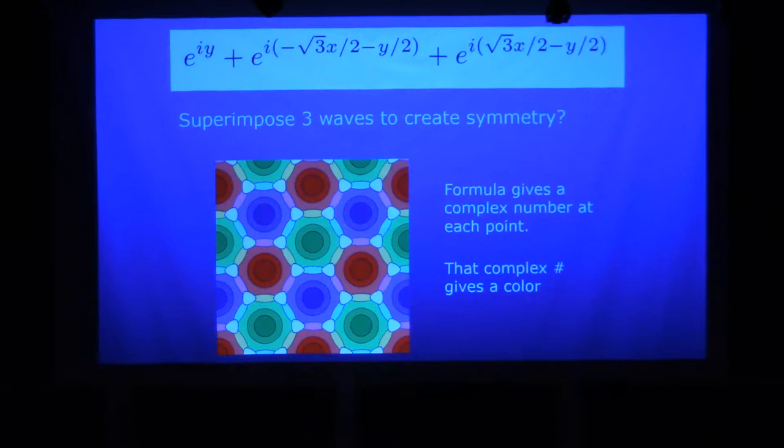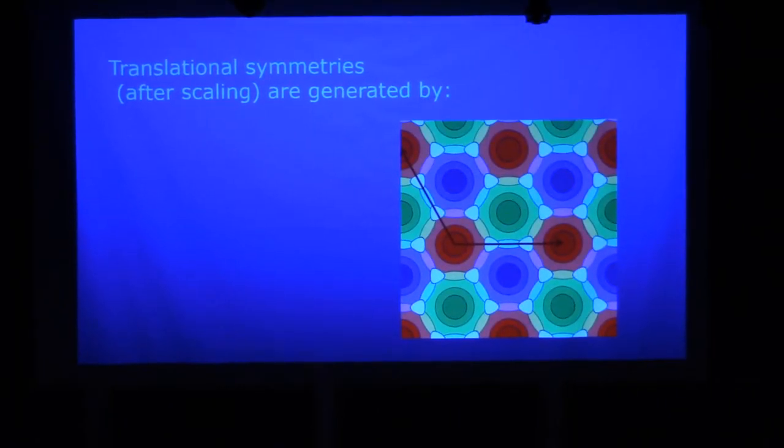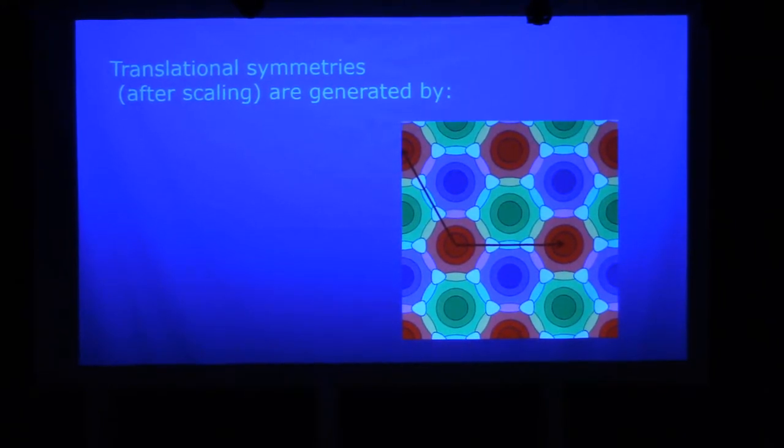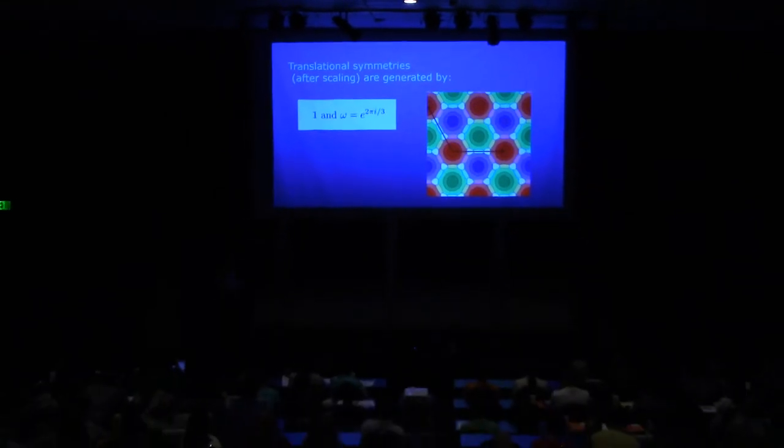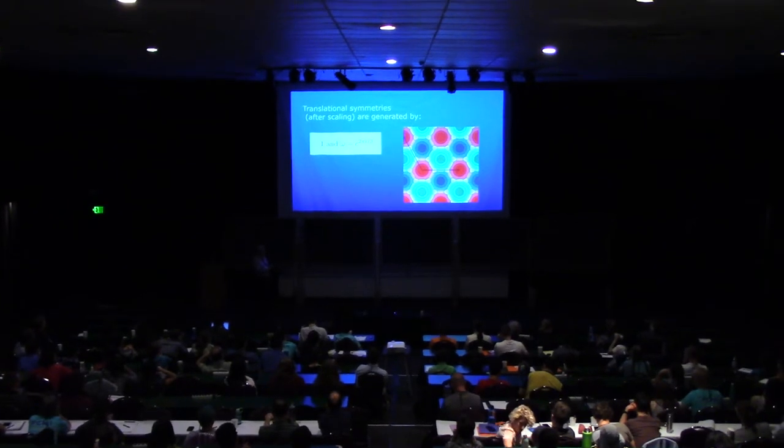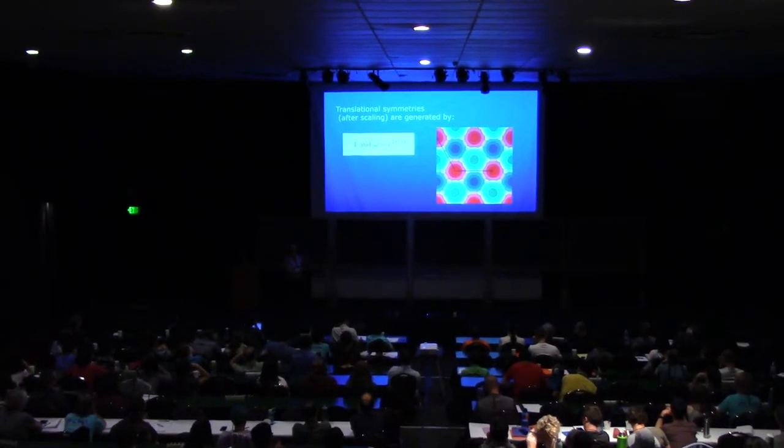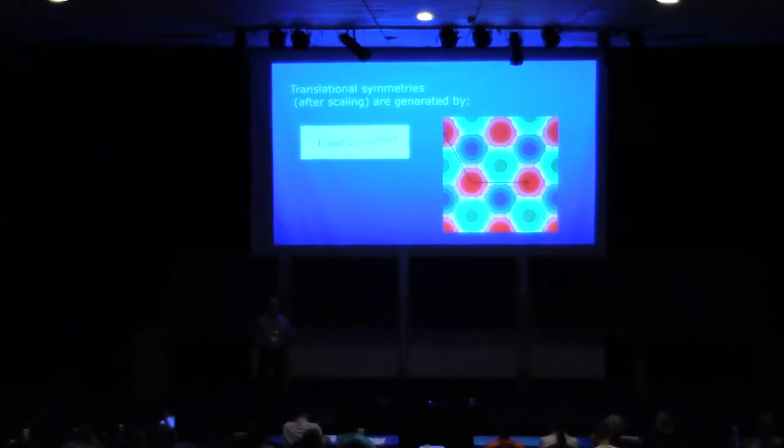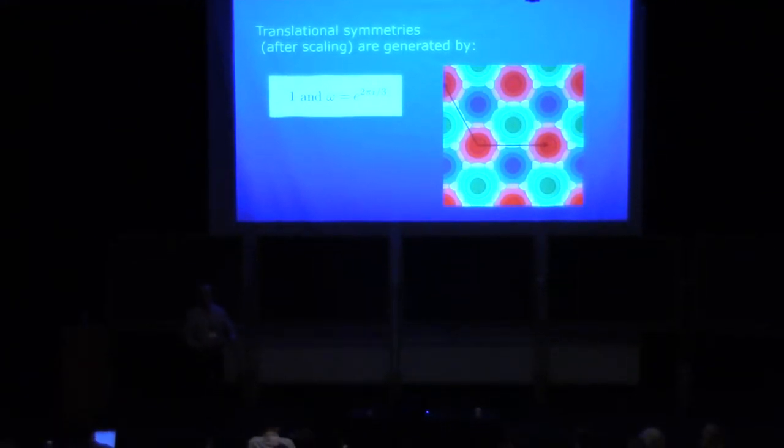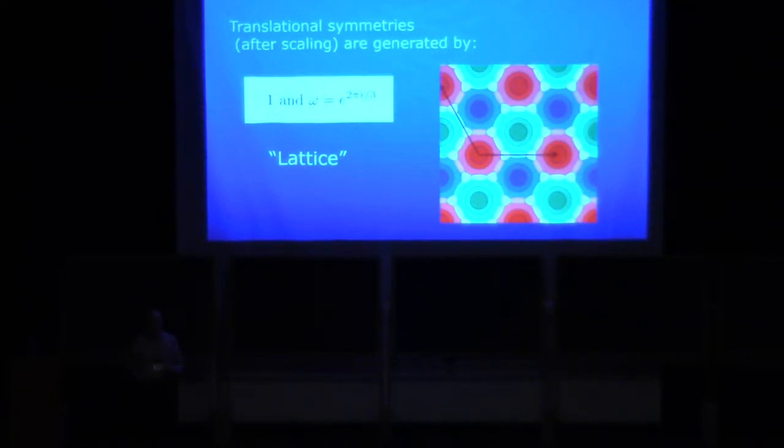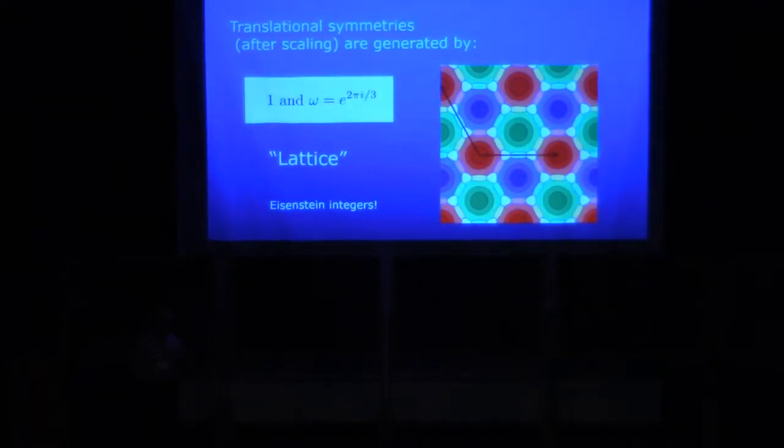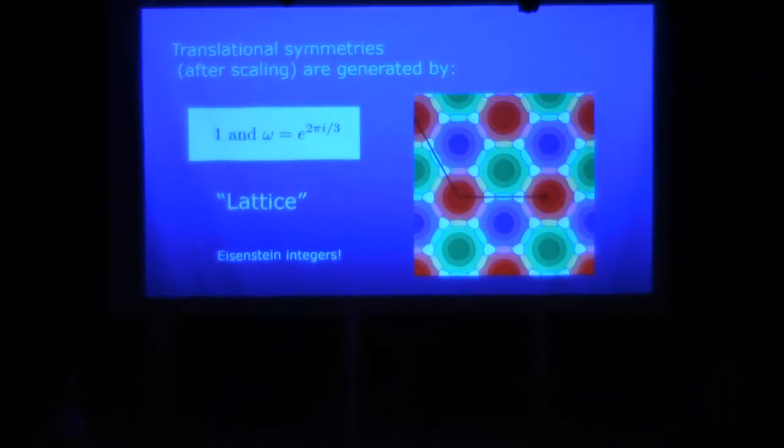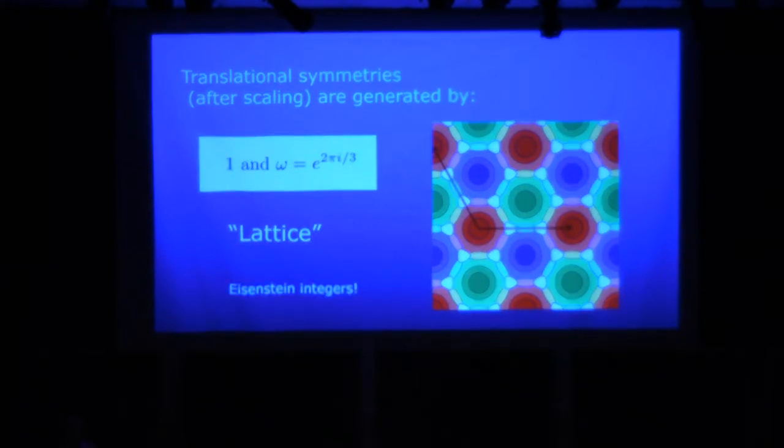There is so much there. That's only three waves superimposed, and they conspire together to make this beautiful wallpaper pattern. The formula gives a complex number at each point, that complex number gives a color. I've created a wallpaper pattern just with three waves. The translational symmetries: the fundamental vectors are one, which is the real direction, and then this omega is a cube root of one, the vector pointing up 120 degrees that way. These are the translational symmetries. Once you have some symmetries, you must have all the symmetries that devolve from them by composition. So I actually get a lattice of these translation vectors, meaning any integer times one plus any integer times omega. That is the ring of Eisenstein integers, which is the ring of integers in the complex number field adjoining the square root of minus three.